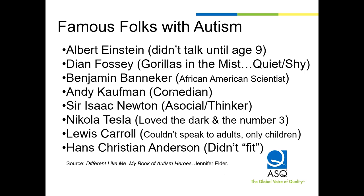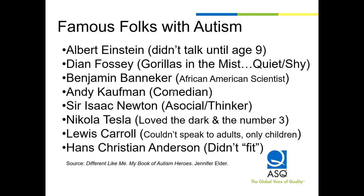There are a lot of famous people you just don't know have autism. Albert Einstein didn't talk until the age of nine and was considered autistic. Diane Fossey, Benjamin Banneker, Isaac Newton, Lewis Carroll — the book 'Different Like Me' is really helpful for people on the spectrum to see that just because you have autism doesn't mean it has to control you. If there are ways to get in front of those symptoms, you can control it. Today, autism affects one in every 59 children, according to the CDC.